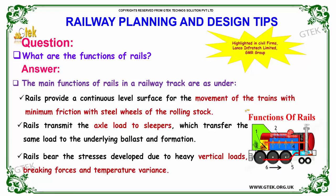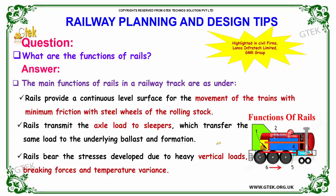Rails transmit the axle load to sleepers, which transfer the same load to the underlying ballast and formation. The rails also bear the stresses developed due to heavy vertical loads, braking forces, and temperature variance.